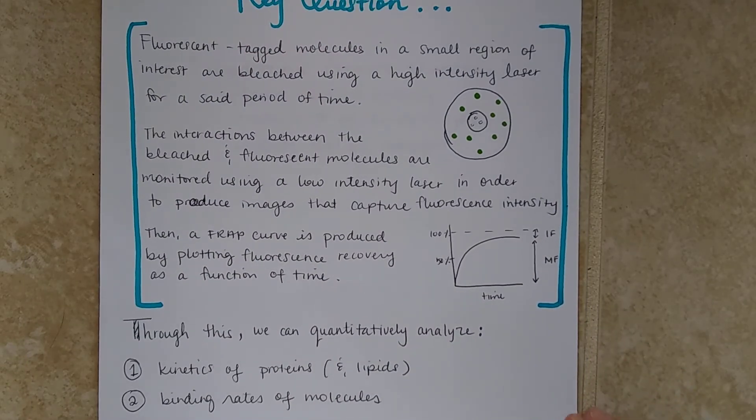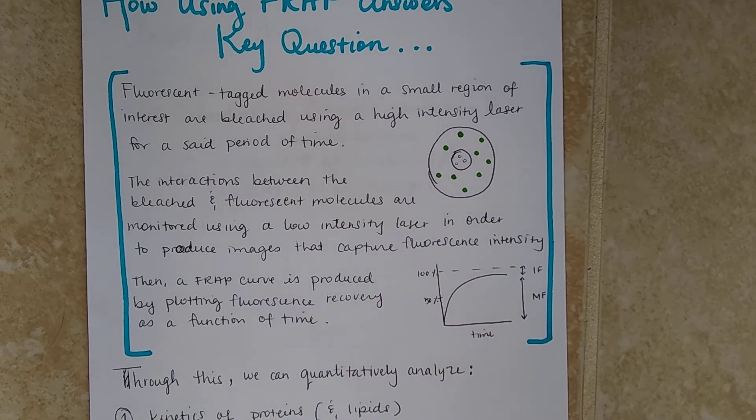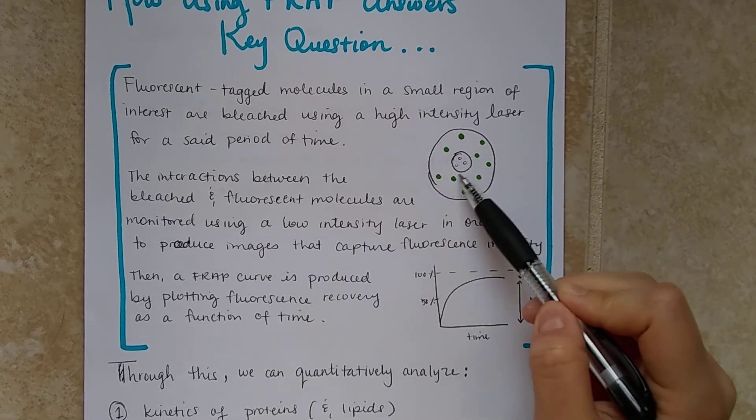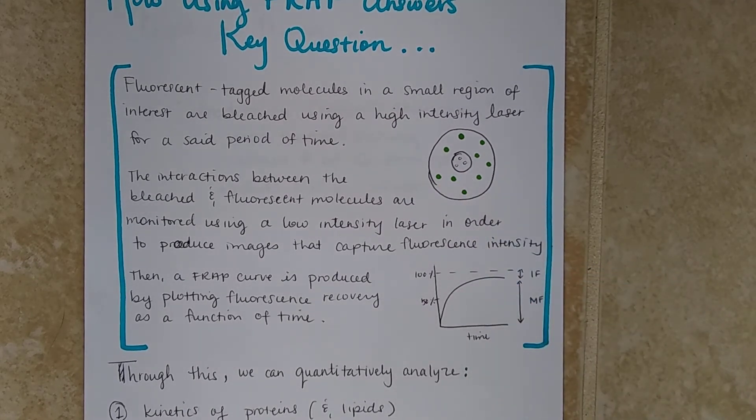So, how using FRAP answers this key question. Going back to the question that was asked earlier, FRAP is used to fluorescently tag the molecules inside the cell, and then the small region is photobleached using a high-intensity laser over a period of time. The interactions between the bleached and fluorescent molecules are monitored using a low-intensity laser in order to produce images that capture the fluorescence intensity.